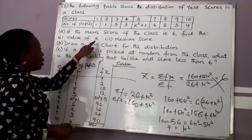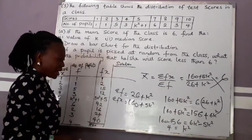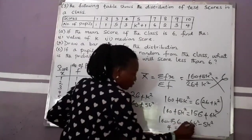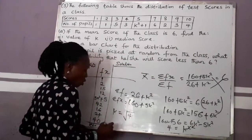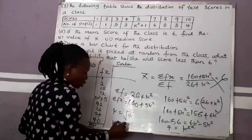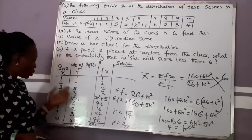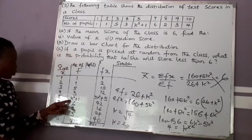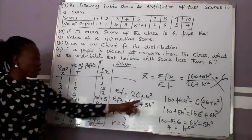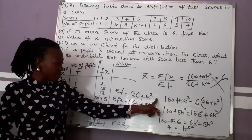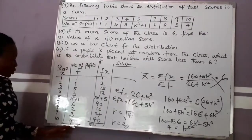We are looking for k, not k squared. So to get k, I take the square root of both sides. The square root of k² cancels to k, and the square root of 4 is 2. So k equals 2. If k = 2, substituting back: summation F = 26 + 4 = 30, and summation Fx = 160 + 20 = 180.